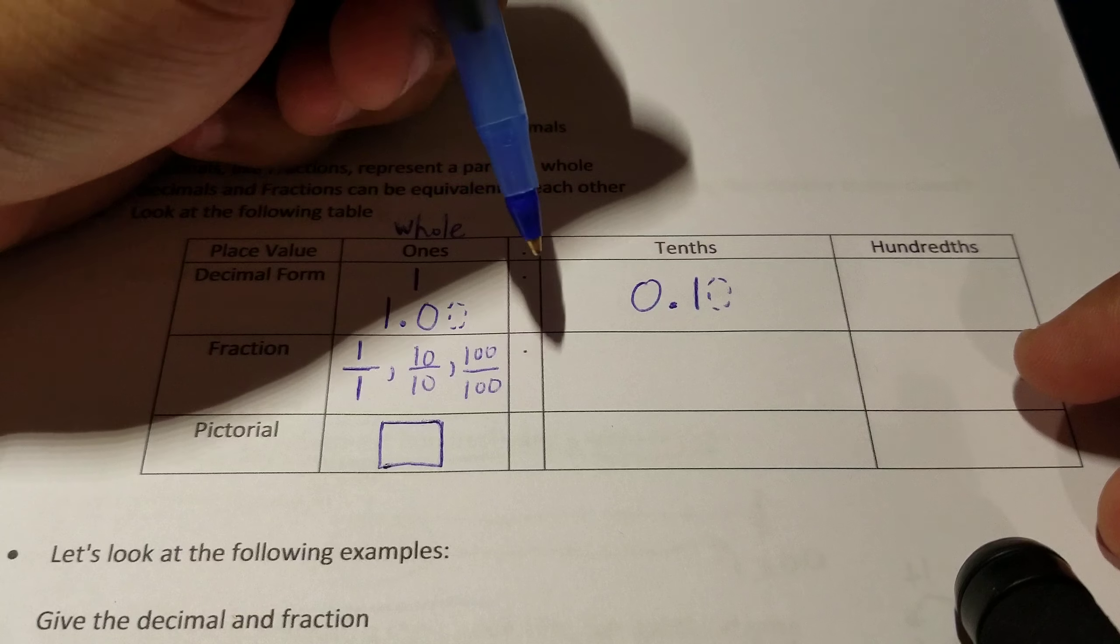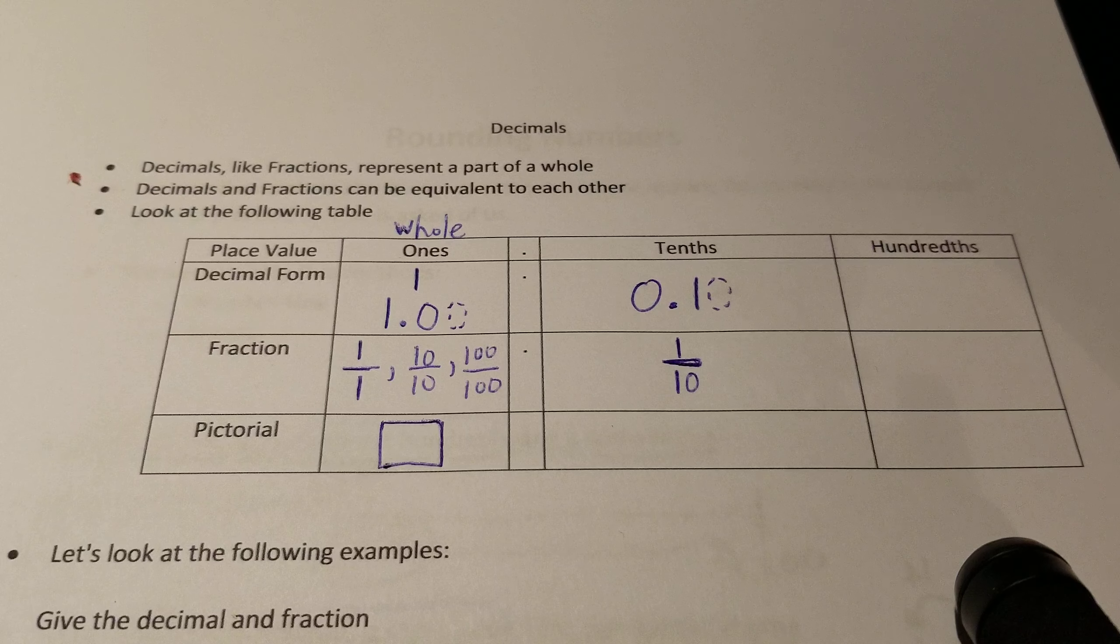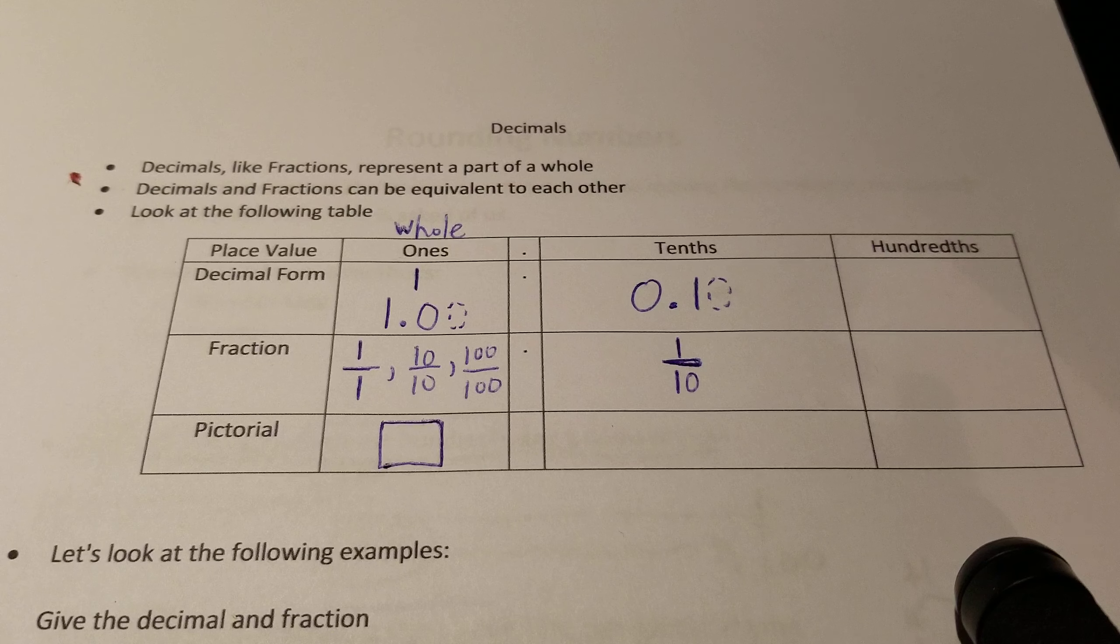In fraction form, to get one tenth, you need one of the ten rods needed to make a tenth. One tenth, one out of ten. Pretty straightforward.